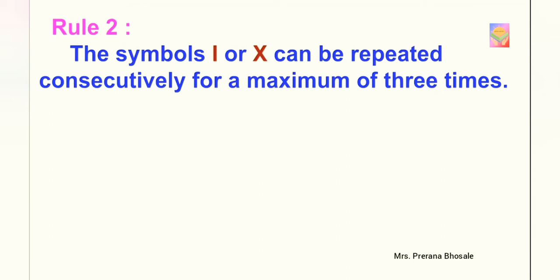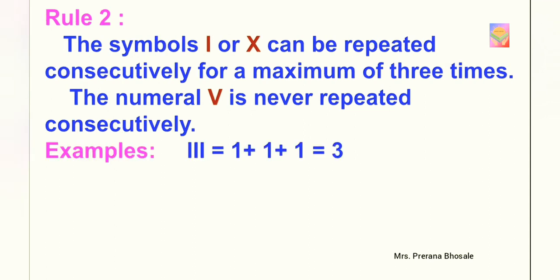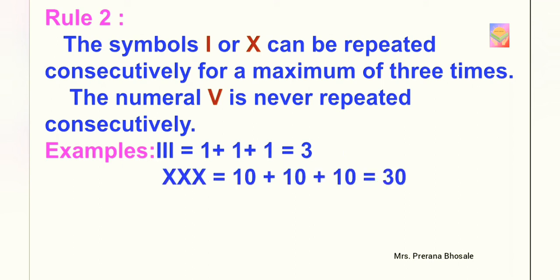Now let's move to rule number 2. The symbols I or X can be repeated consecutively for a maximum of 3 times. The numeral V is never repeated consecutively. It means you can repeat I 3 times and its value will become 3. You can also repeat X 3 times. Its value will become 10 plus 10 plus 10 is equal to 30.